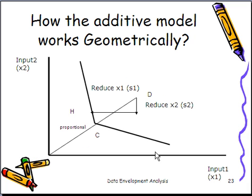Let's say you have two inputs, input 1 and input 2. Again, in the original input-oriented model, you can reduce to this point on the frontier. If you have a slack-based model or the additive model, what you do, you can reduce the X2 by this amount and then you're going to reduce the X1 by that amount. So this is the slack. This is what we call the slack.